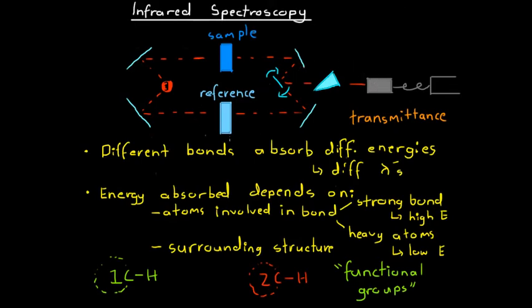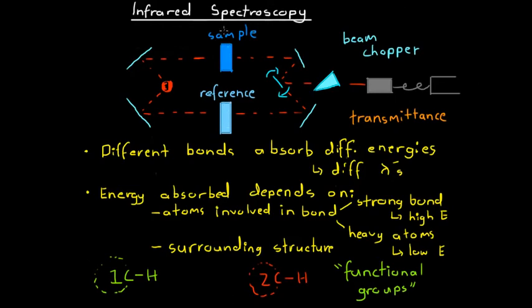The reason we have a reference cell is that we use it in conjunction with a device called a beam chopper. The beam chopper alternates the light reaching the detector — one instant, light from the reference cell; the next, light from the sample cell. This lets us compare the transmittance of different wavelengths between the two cells, so we're only analyzing light absorbed by the dissolved compound, not by the solvent itself. By comparison, we eliminate the solvent's effect and get a more accurate identification of our compound.